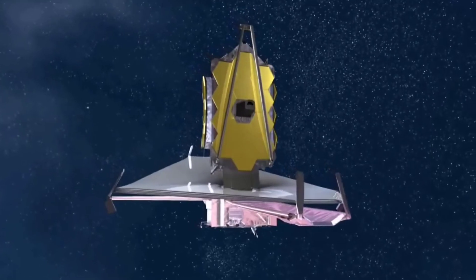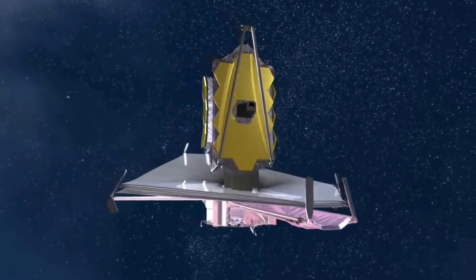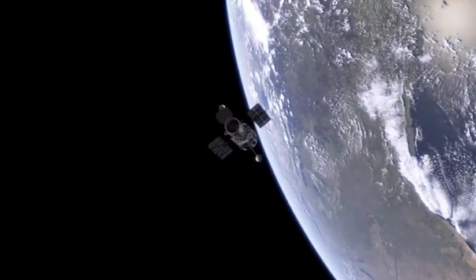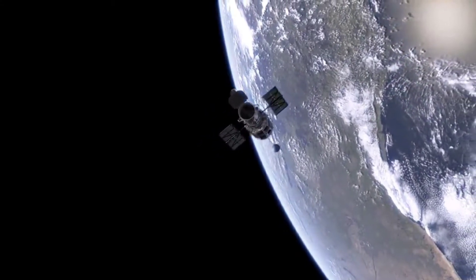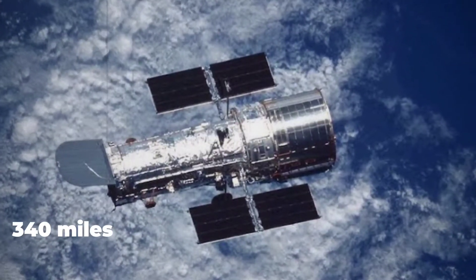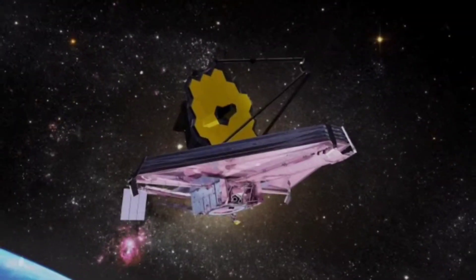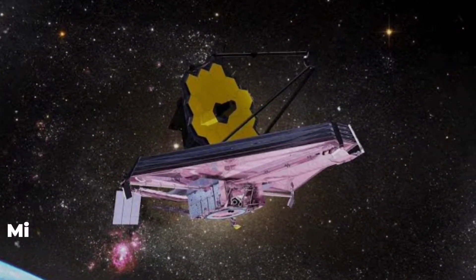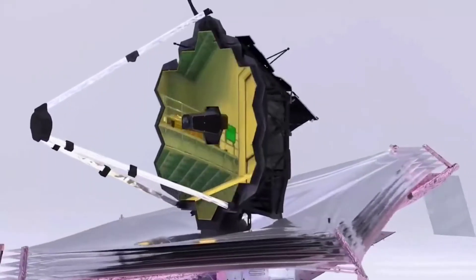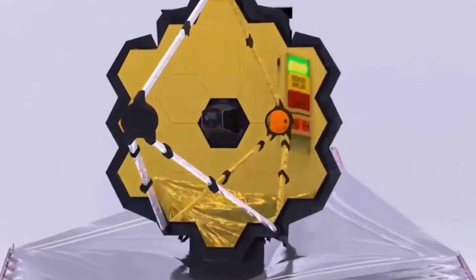The JWST has exceptional features which can travel further in the universe and take better pictures making it far better than the Hubble. The Hubble is only 340 miles away from the Earth, while the JWST is much farther, around a million miles away, making it impossible for repairs during its launch and operation, unlike the Hubble.